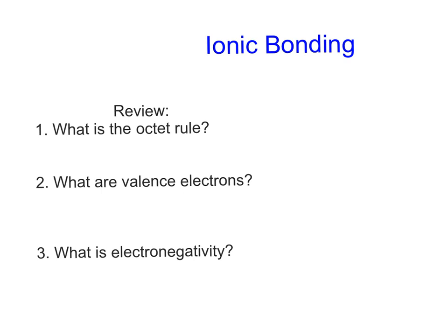In order to be able to talk about bonding, let's do a little bit of a review. First we have the octet rule. You see that word octet and you should be thinking eight. This is the rule that all atoms are going to bond or interact in ways in order to have a fulfilled octet, or eight valence electrons.